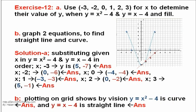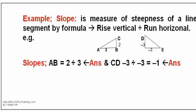Exercise 12A: Plot Y equals X squared for 4 and Y equals X for 4 for X equals -3, -2, 0, 1, 2, 3 and join points by blue and brown lines respectively. B: Blue is a curve and brown is straight line. Example slopes: It is a measure of steepness of a line segment by formula rise vertical divided by run horizontal.